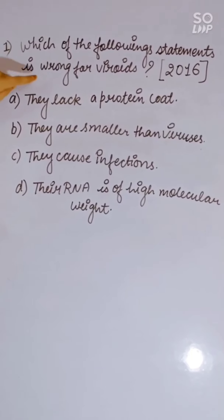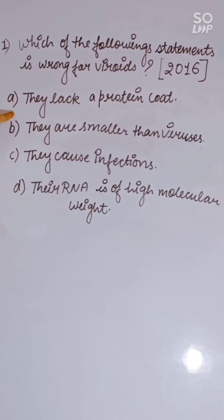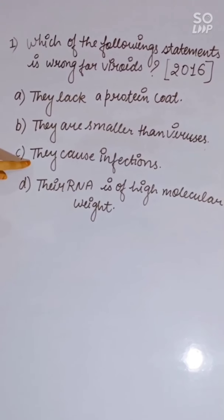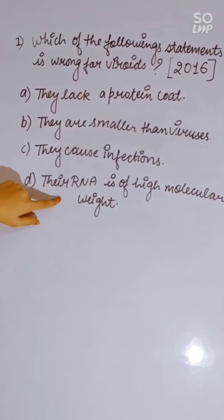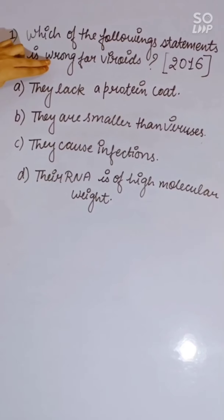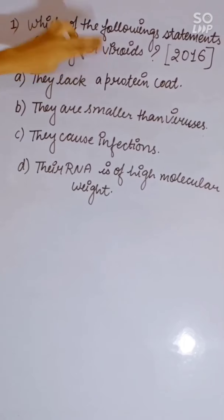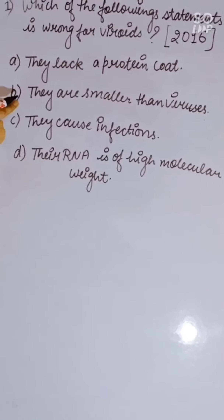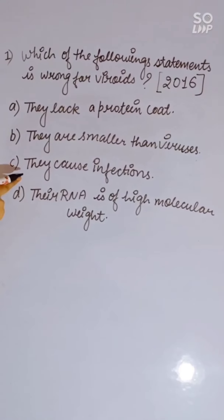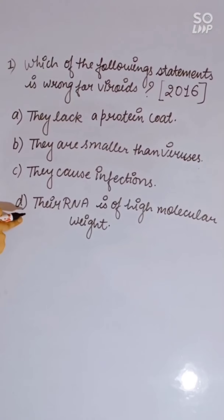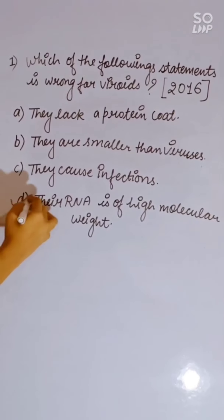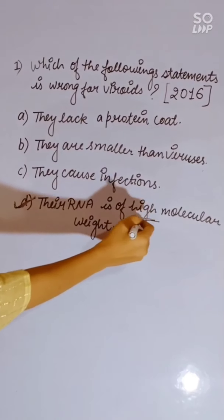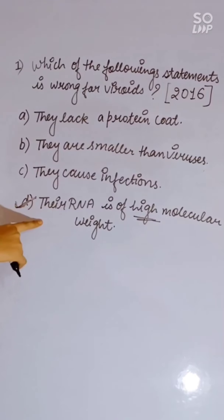NEET 2016 question: Which of the following statements is wrong for viroids? First: they lack a protein coat. Second: they are smaller than viruses. Third: they cause infection. Fourth: their RNA is of high molecular weight. The wrong statement is the fourth — viroids do not have high molecular weight RNA; viroids have low molecular weight RNA.